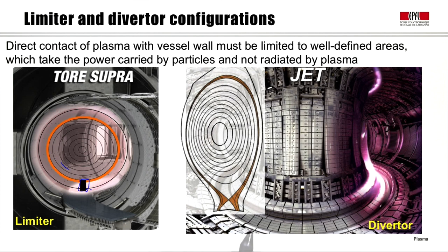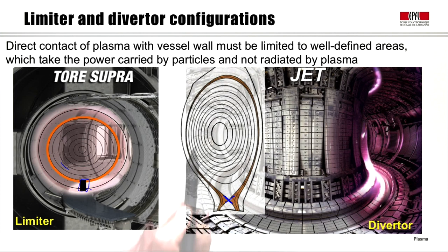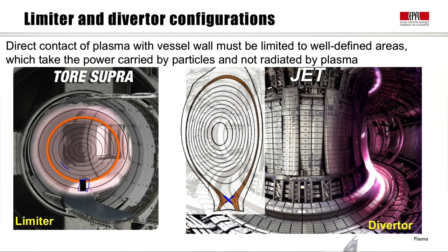In the limiter, the plasma is limited on that material surface. On the right-hand side, JET is an example of a tokamak with a diverter — a magnetic configuration that provides a null point for the poloidal field, called the X point. This creates a separation between flux surfaces inside that don't touch any material surface and the lines outside that actually touch a material surface, giving a much clearer separation between confined core and edge. The X point is achieved with specific magnetic coils, and in ITER they would be outside the vessel.